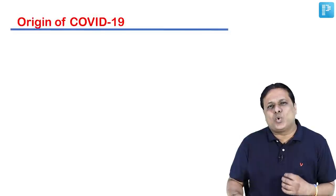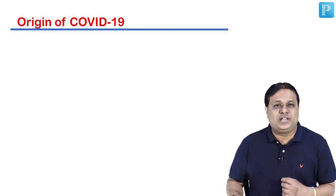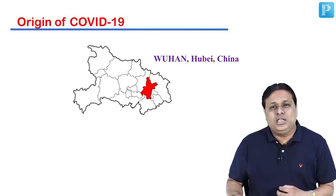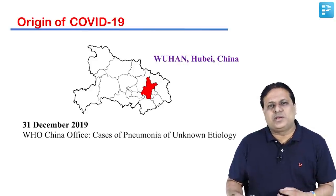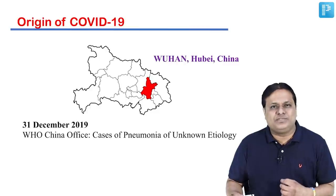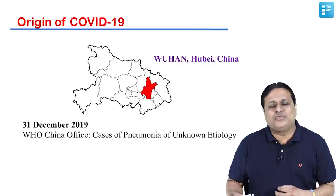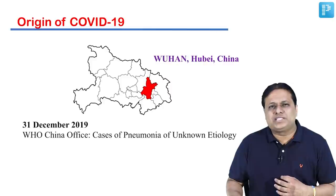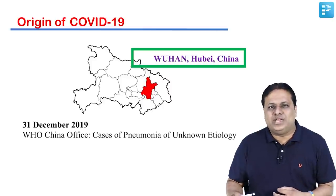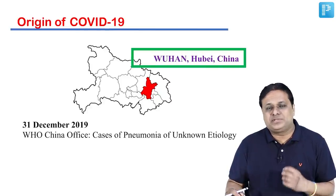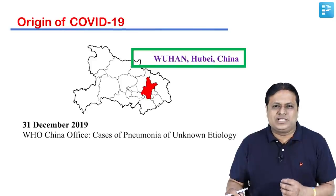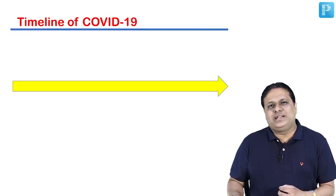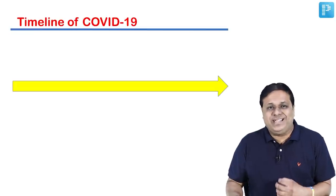COVID-19 originated from Wuhan, Hubei province of China. It was first reported on 31st December 2019 — the last day of the year — to the WHO China country office as cases of pneumonia of unknown etiology. Please remember: the origin of this pandemic lies from China, Wuhan city, Hubei province. The first case was identified in Wuhan, China on 1st December 2019.